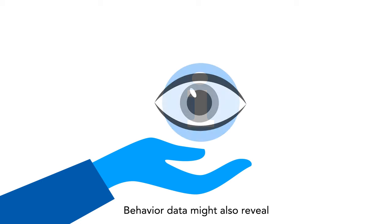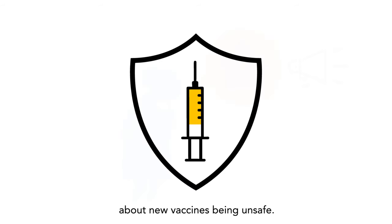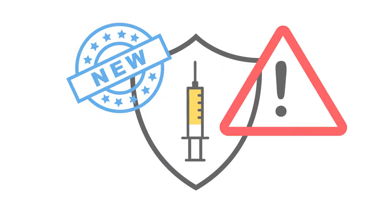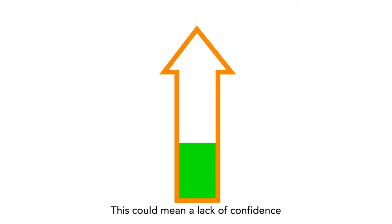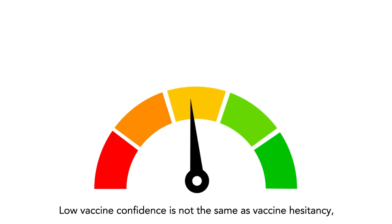Behavioral data might also reveal an older adult has some questions or concerns after being exposed to rumors online and comments from neighbors about new vaccines being unsafe. This could mean a lack of confidence that vaccines are safe and effective. Low vaccine confidence is not the same as vaccine hesitancy, but it might contribute to it.